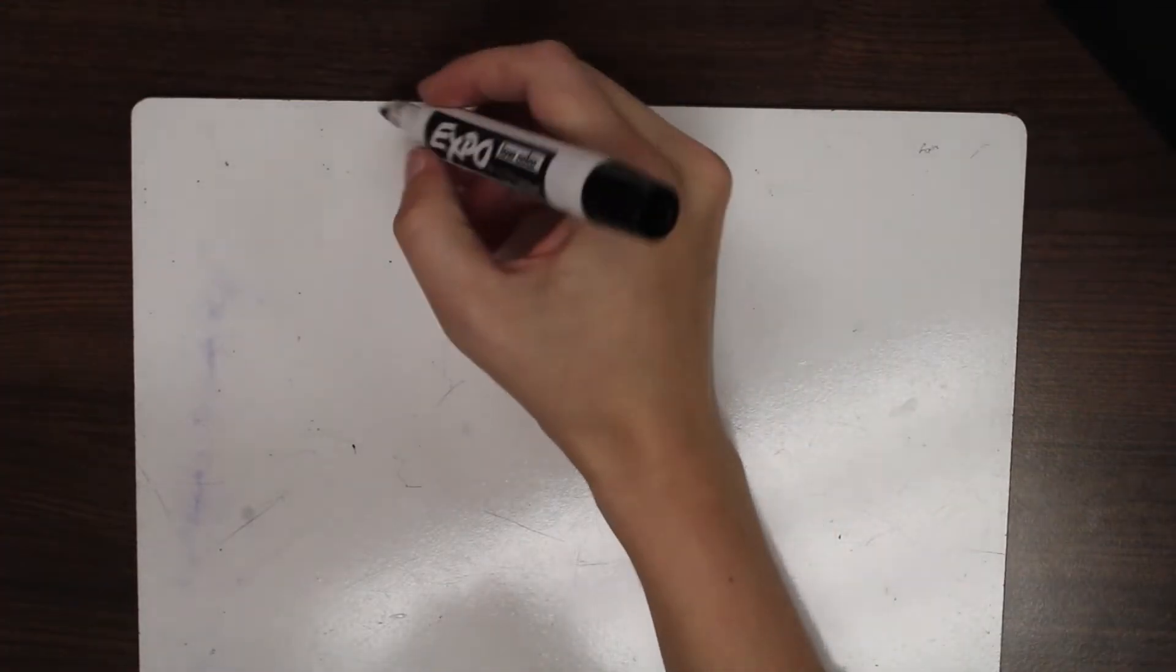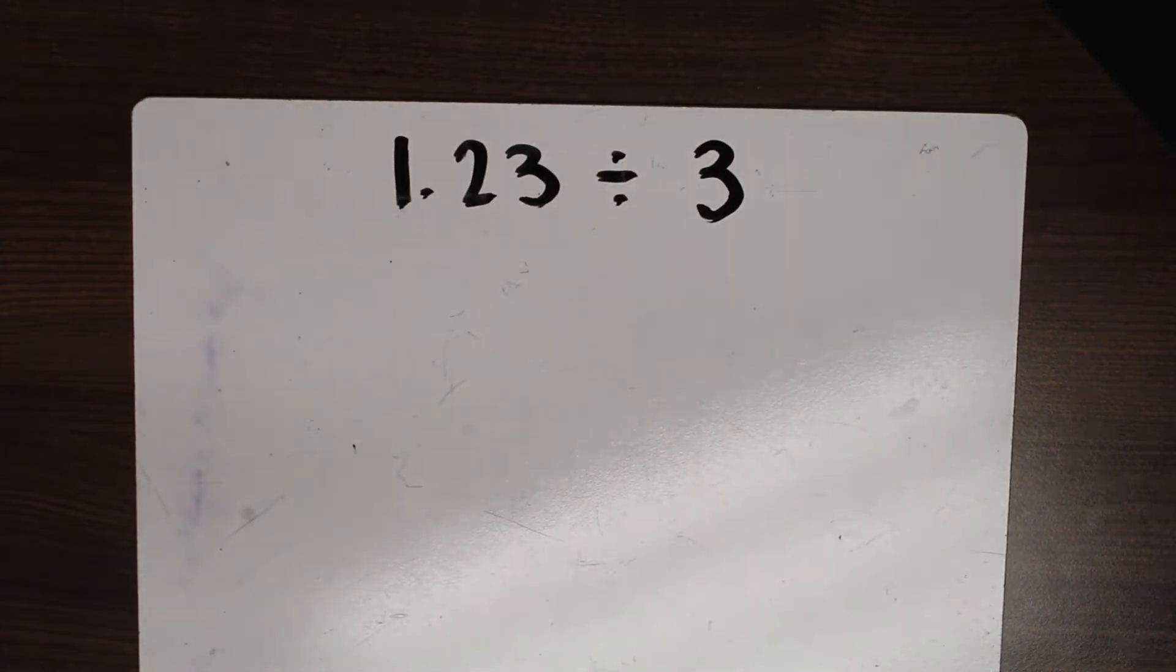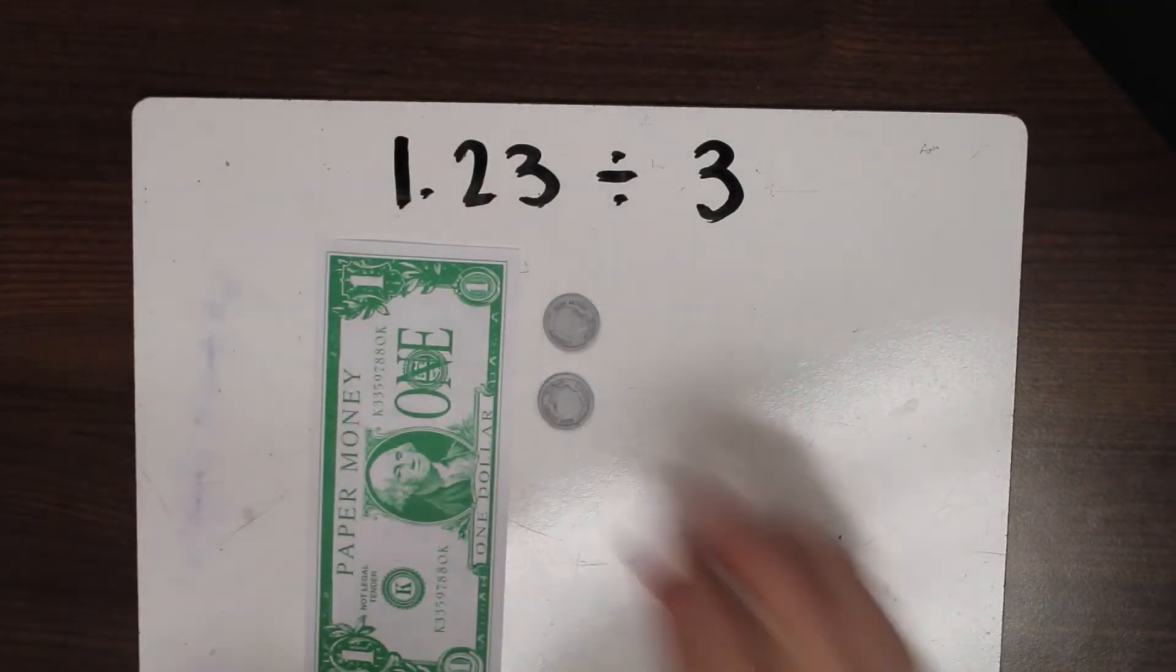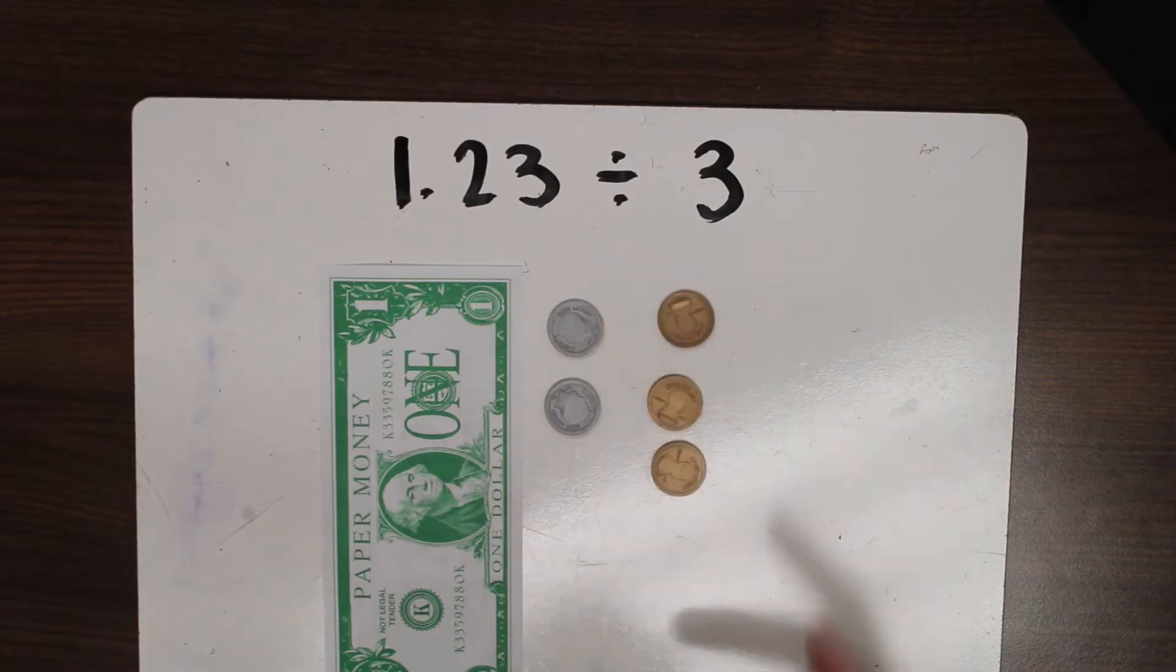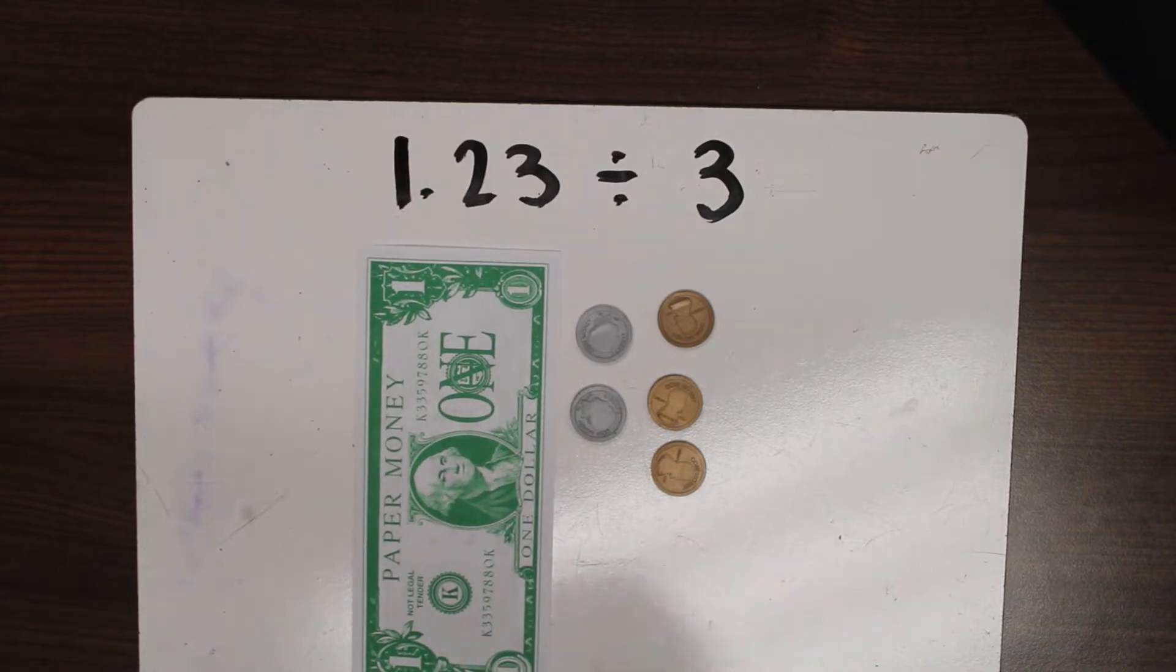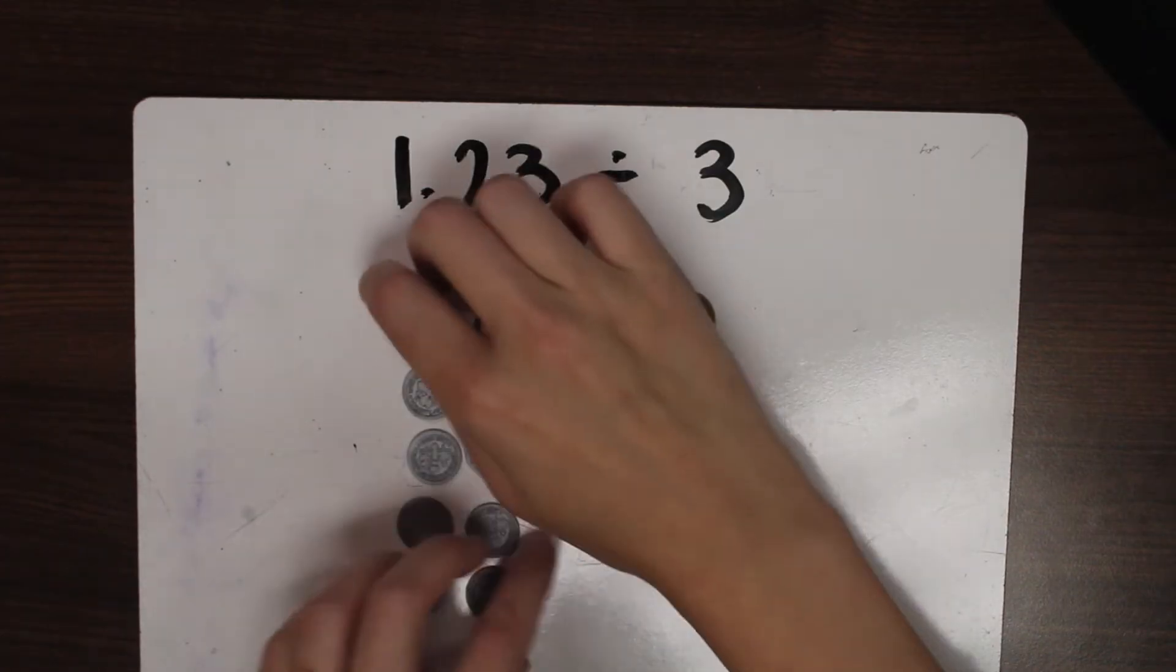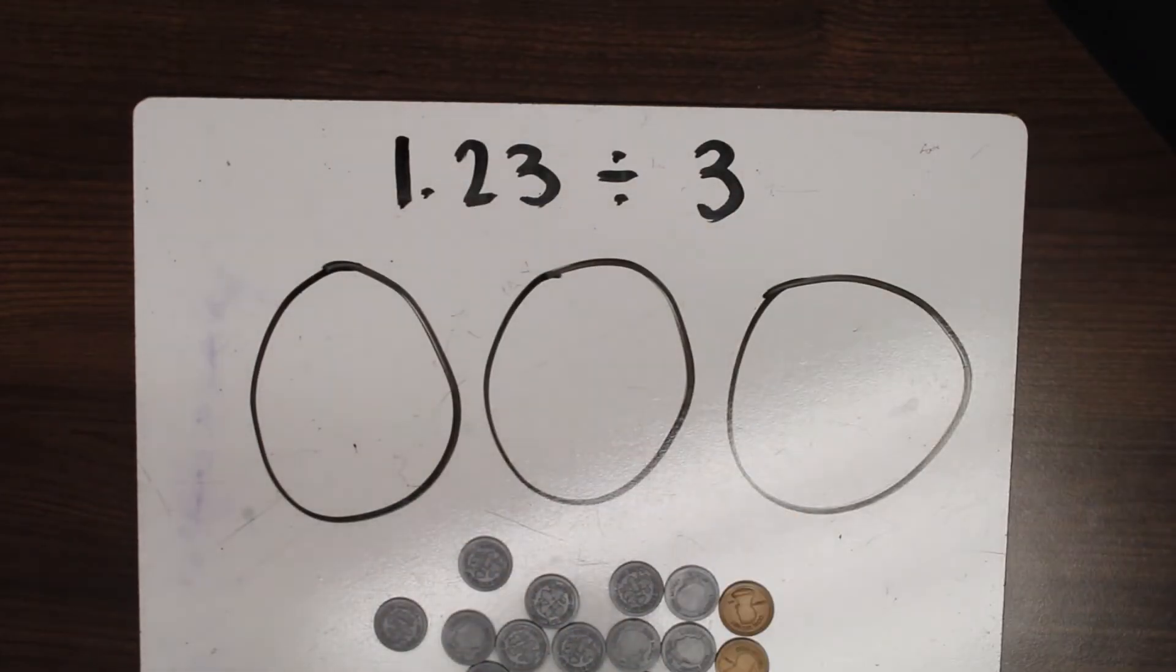We're going to work on today modeling the problem 1 and 23 hundredths divided by 3. First thing that we're going to use is money because everybody loves money. So I'm going to get out my totally real dollar and 23 cents. If I wanted to split this, since division is like splitting into equal groups, into three equal groups, I can't really do that with a dollar 23. So I'm going to take this dollar and split it into dimes. Still a dollar, just made it out of dimes instead. We're going to split this into three equal groups.